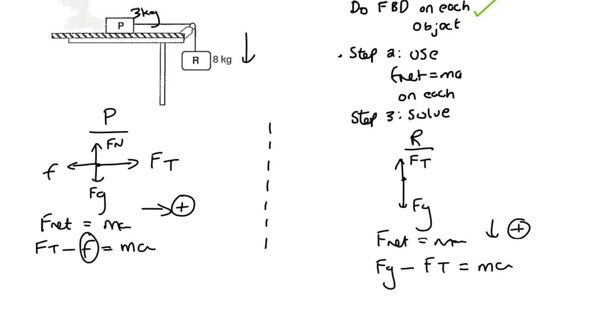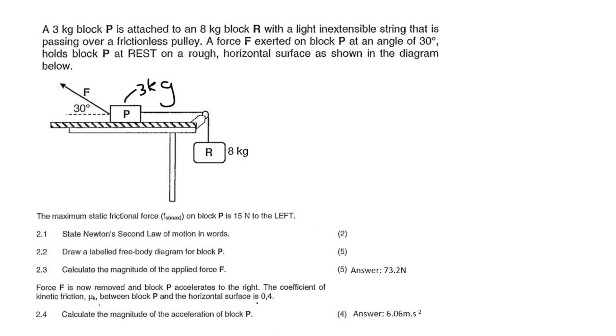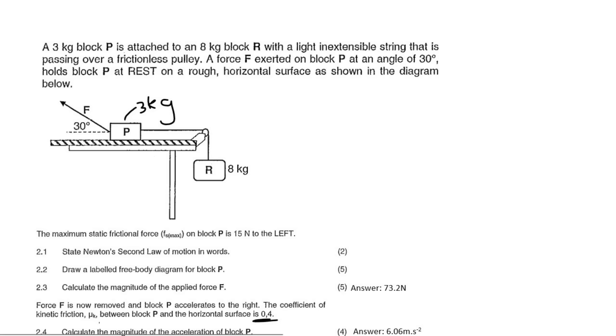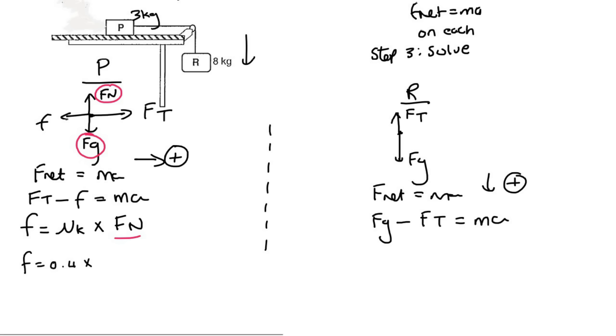Now we need to go calculate the friction force. Now they did tell us that the coefficient is 0.4. So we will have to use the friction formula, which is the coefficient multiplied by the normal force. The normal force is exactly the same as gravity. There's no weird angles or anything like that. So we can just say that the friction force is going to be the coefficient, which is 0.4, multiplied by the normal force, which would be the same as gravity. So that would be 3 times 9.8. And so if we had to calculate the friction, we would get 11.76 Newtons. So now I can carry on. We can say tension force minus 11.76 equals to 3A.